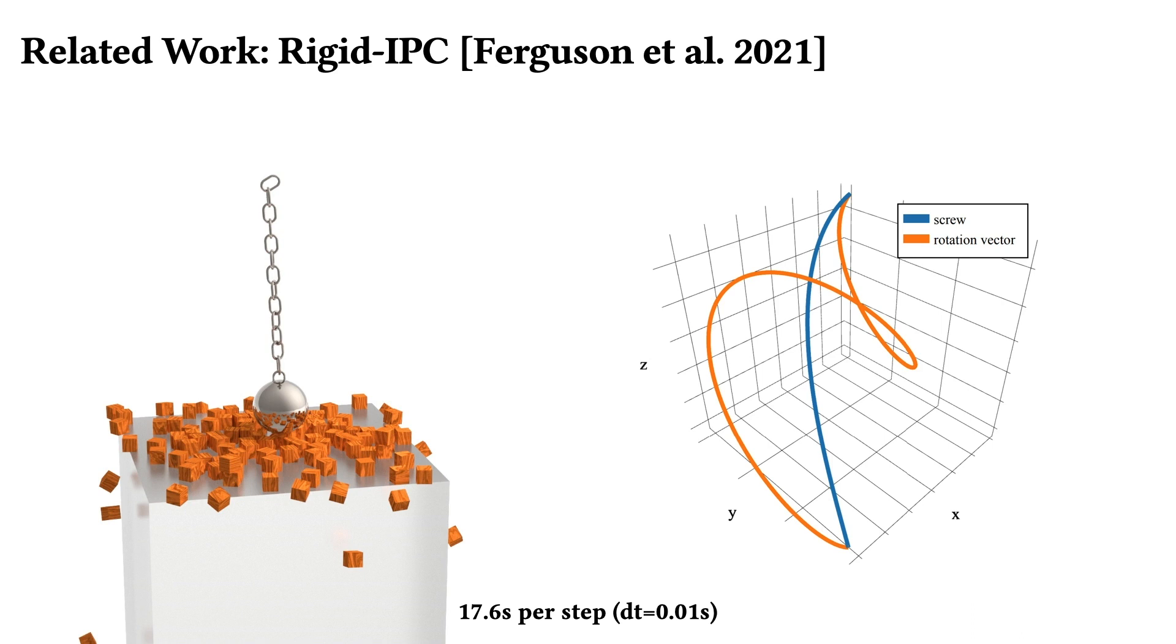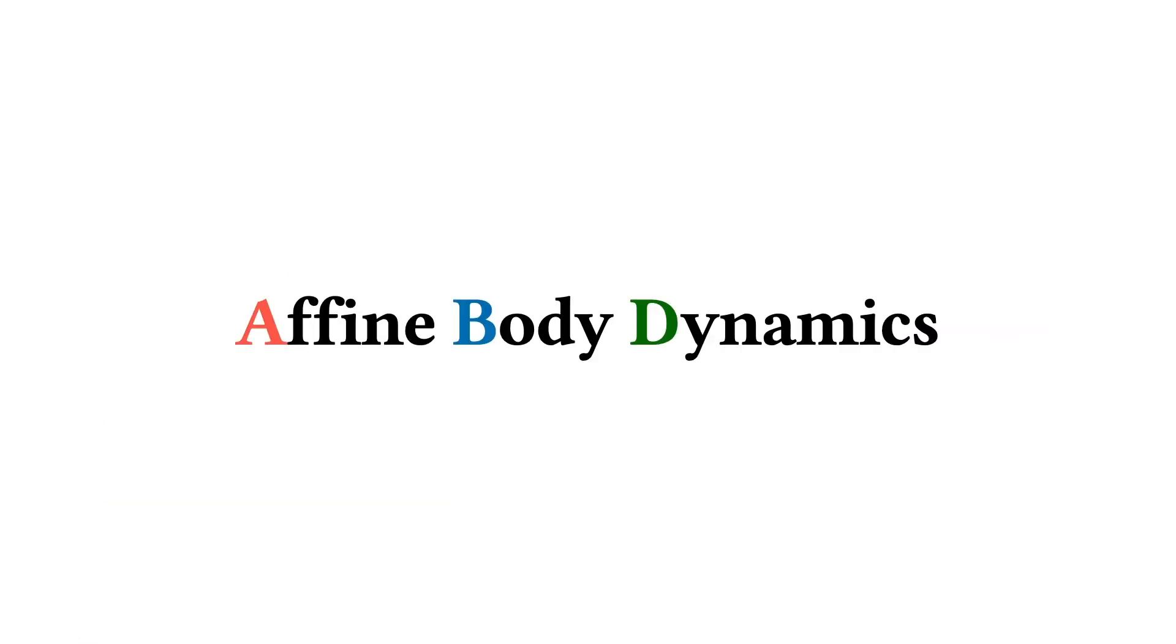To obtain the best of both worlds, we propose affine body dynamics, or ABD. ABD simulates stiff, close-to-rigid, frictional contact dynamics with both guarantees of non-intersection and speeds that are comparable and faster than highly optimized rigid body libraries like Bullet.